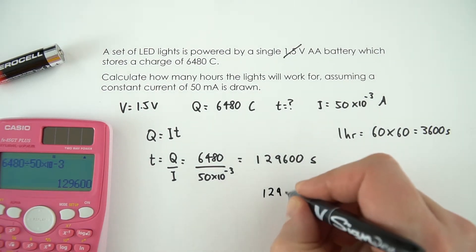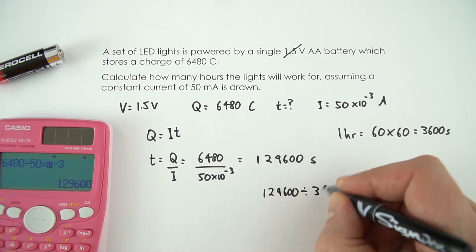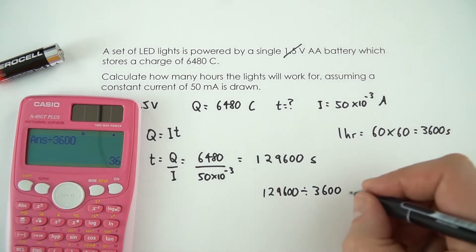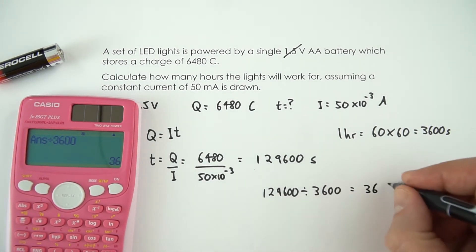So 129600 divided by 3600 is equal to 36 hours.